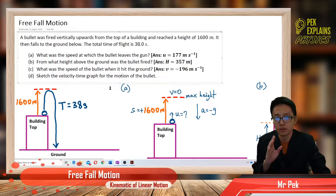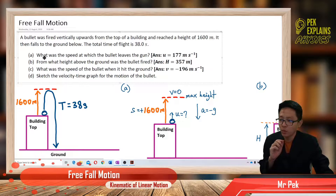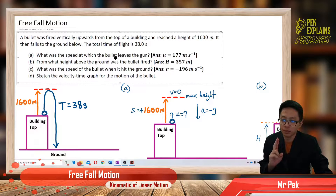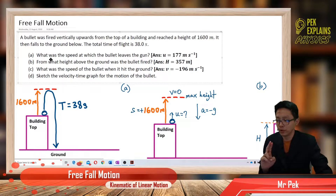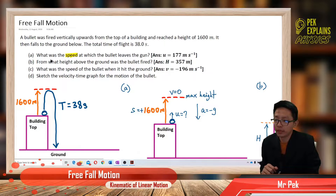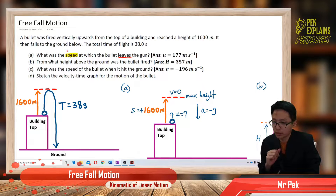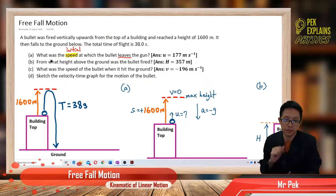Now let us do Part A: what was the speed at which the bullet leaves the gun? The question asks for the speed when it leaves the gun, which means we want to find the initial speed.